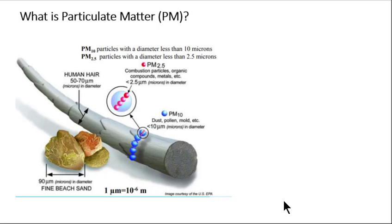The precise particle sizes associated with PM pollution are illustrated by the graphic shown below. Since these particles are small in size, we generally refer to particle sizes of PM in micrometers. One micrometer is one millionth of a meter and one thousandth of a millimeter. A common upper bound of particle size where particles stay suspended in air is 10 micrometers in diameter. We call the mass concentration of PM pollution for particles smaller and up to 10 micrometers, PM10.